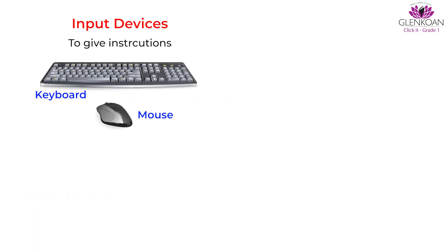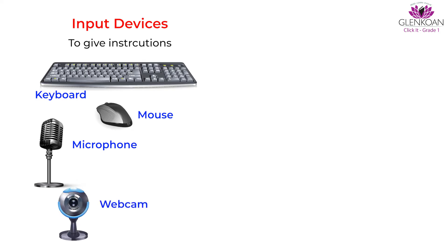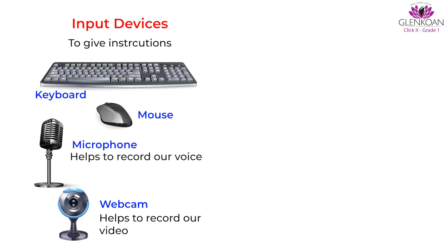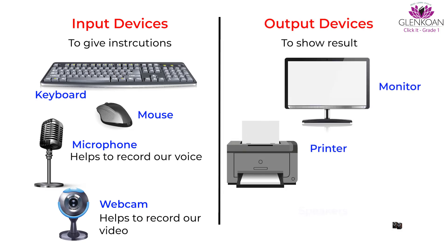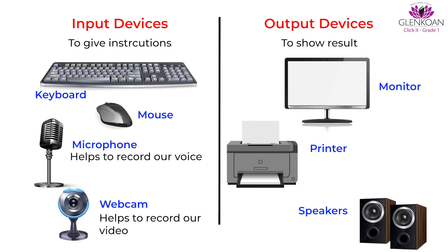A few more examples of input devices are microphones and webcams. A microphone helps us to record our voice and a webcam helps us to record our video. A few output devices are printers and speakers. A printer helps us to print documents and speakers help us to listen to music.